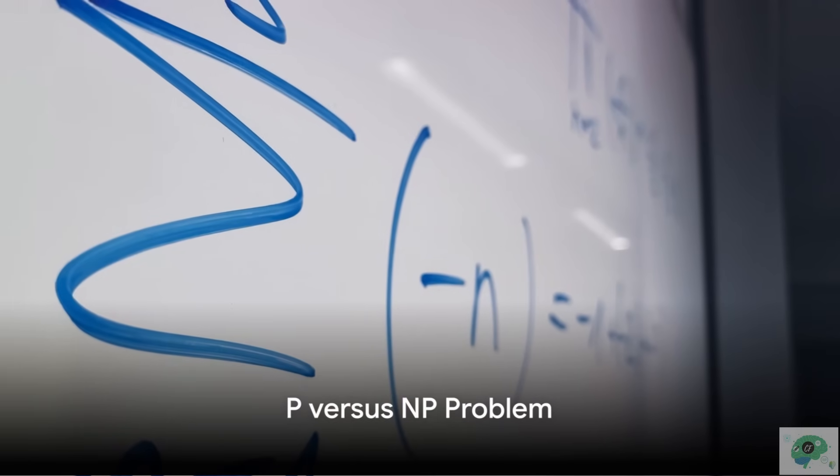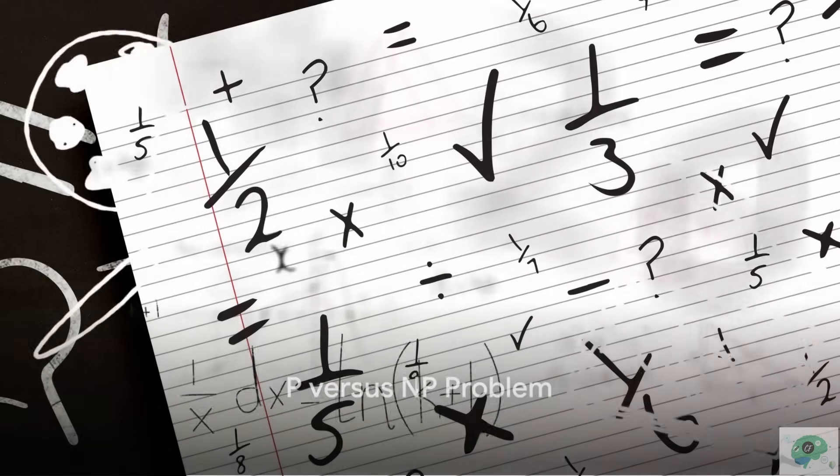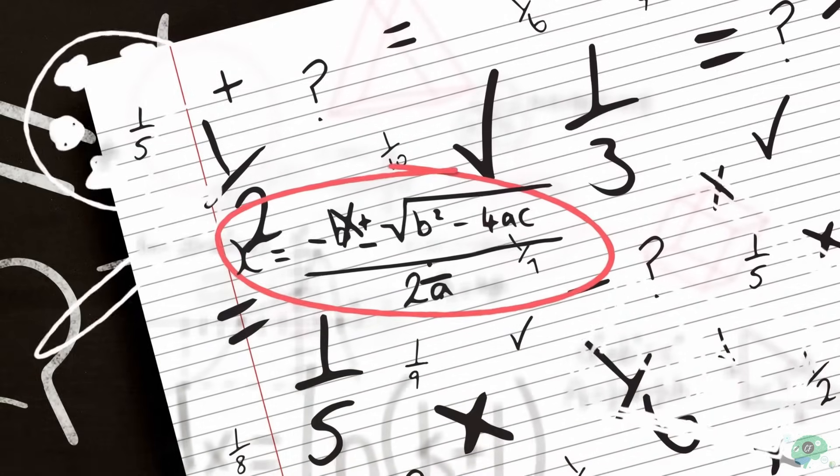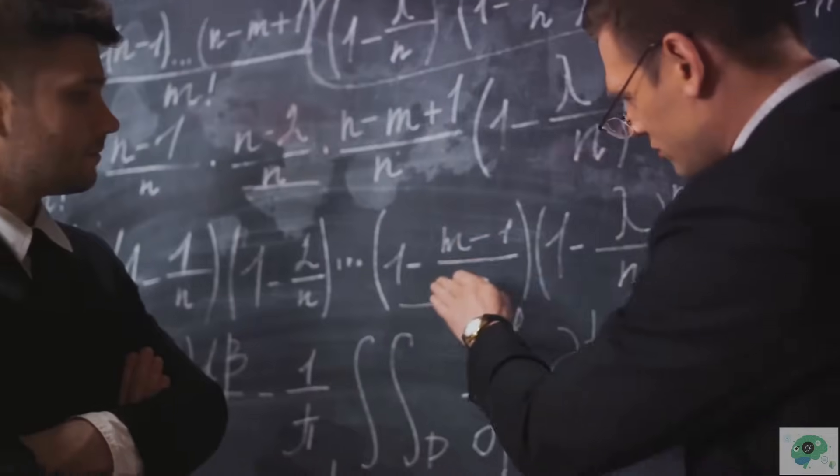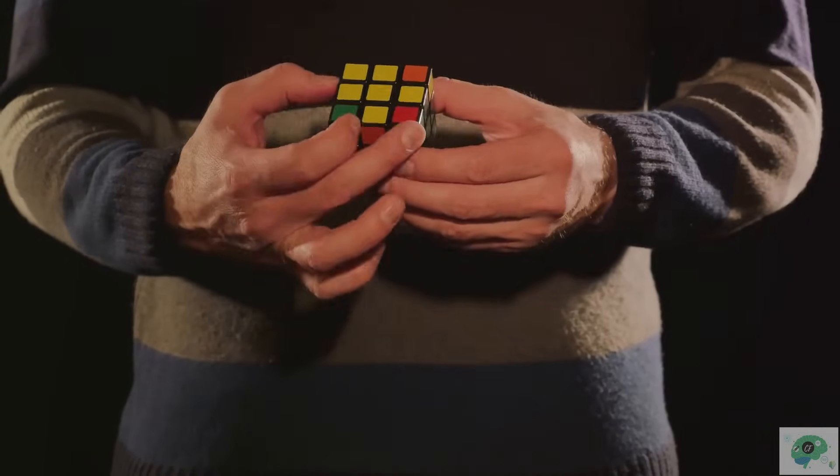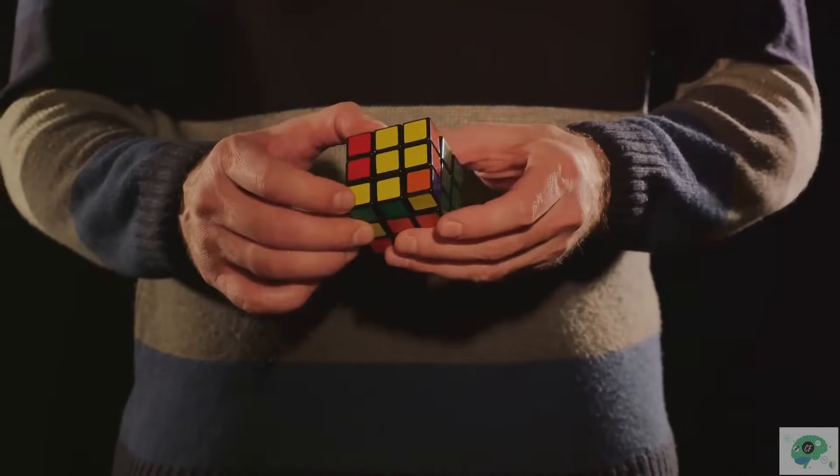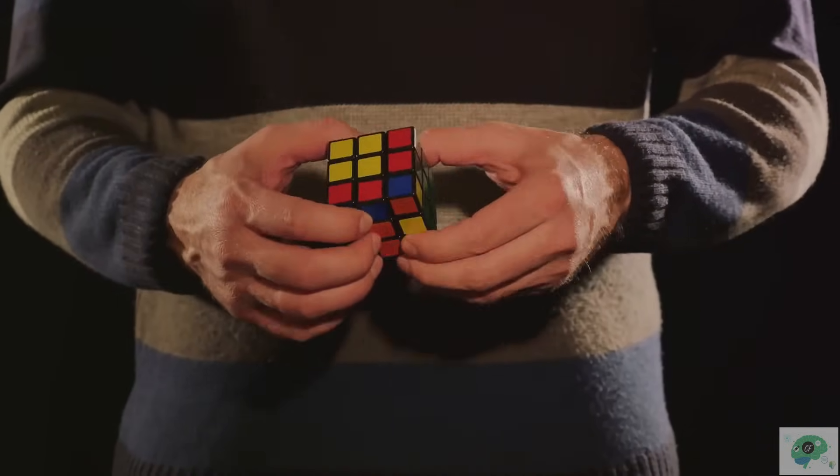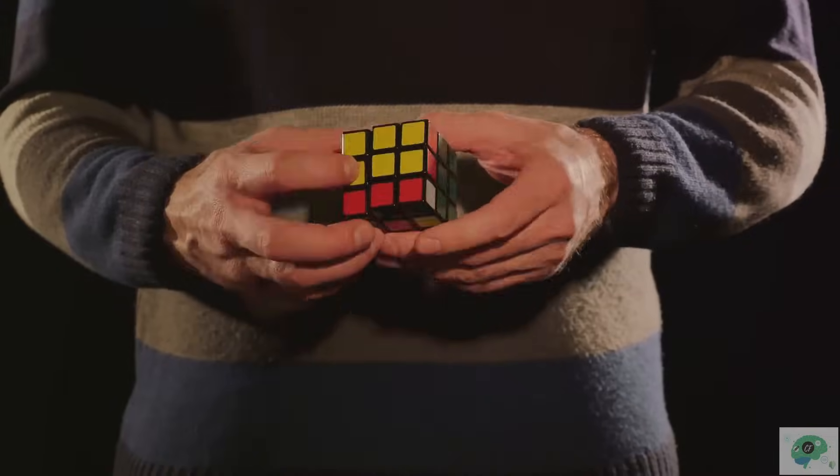From fluid dynamics, we shift gears to the heart of computer science with the P versus NP problem. The P versus NP problem, a riddle that continues to baffle the brightest minds in computer science. This conundrum lies within the realm of computational complexity theory. It asks a fundamental question. If a solution to a problem can be verified quickly by a computer, can the problem itself also be solved quickly?